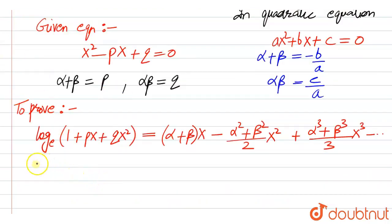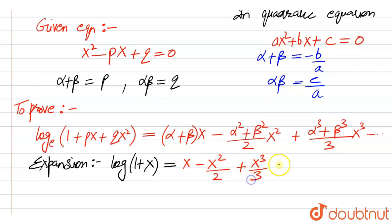Now we should know that the expansion of log of 1 plus x is equal to x minus x squared by 2 plus x cube by 3 minus x to the power 4 by 4 and so on. This is the expansion. So what we will do here,